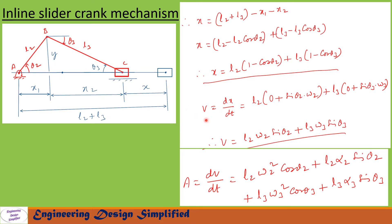The velocity of the slider V equals dx/dt. Differentiating: the derivative of 1 is 0, and the derivative of −cos theta2 gives sin theta2 · omega2, and similarly the derivative of −cos theta3 gives sin theta3 · omega3. After rearranging, the velocity of the slider is V = L2·omega2·sin theta2 + L3·omega3·sin theta3, where omega2 is the angular velocity of the crank and omega3 is the angular velocity of the coupler.